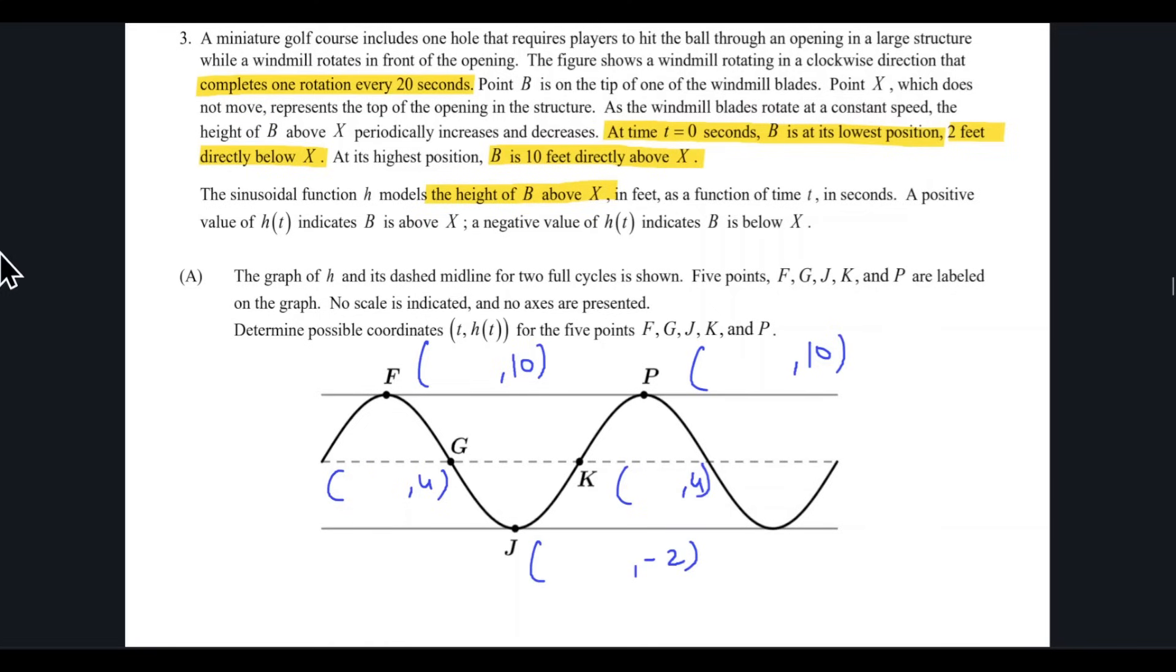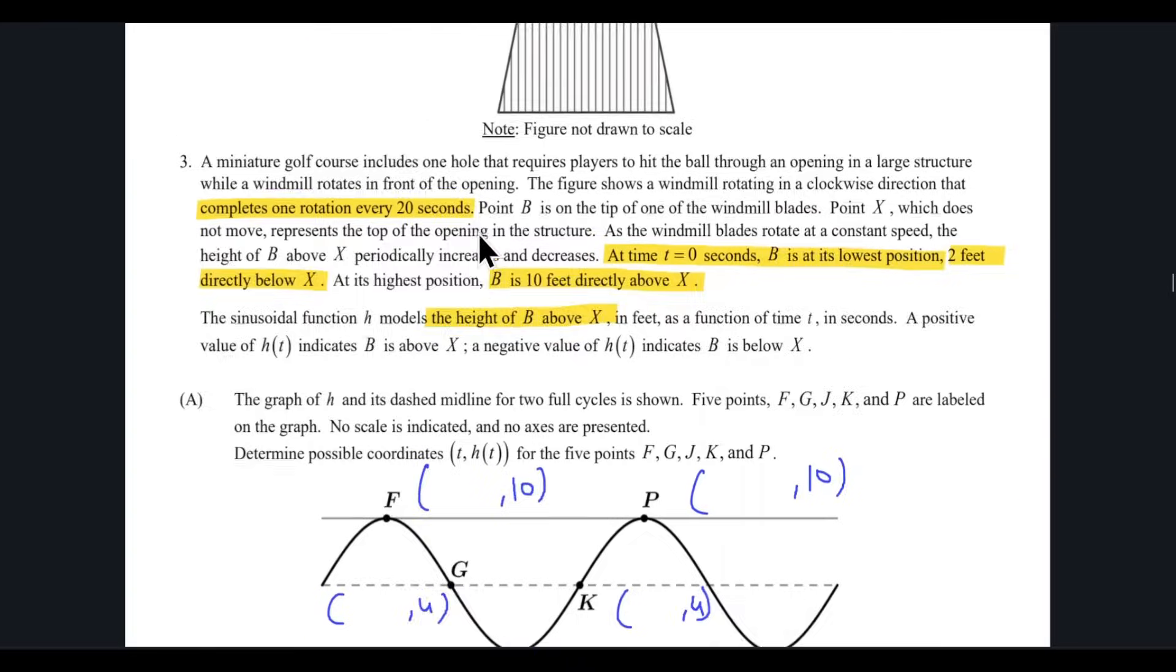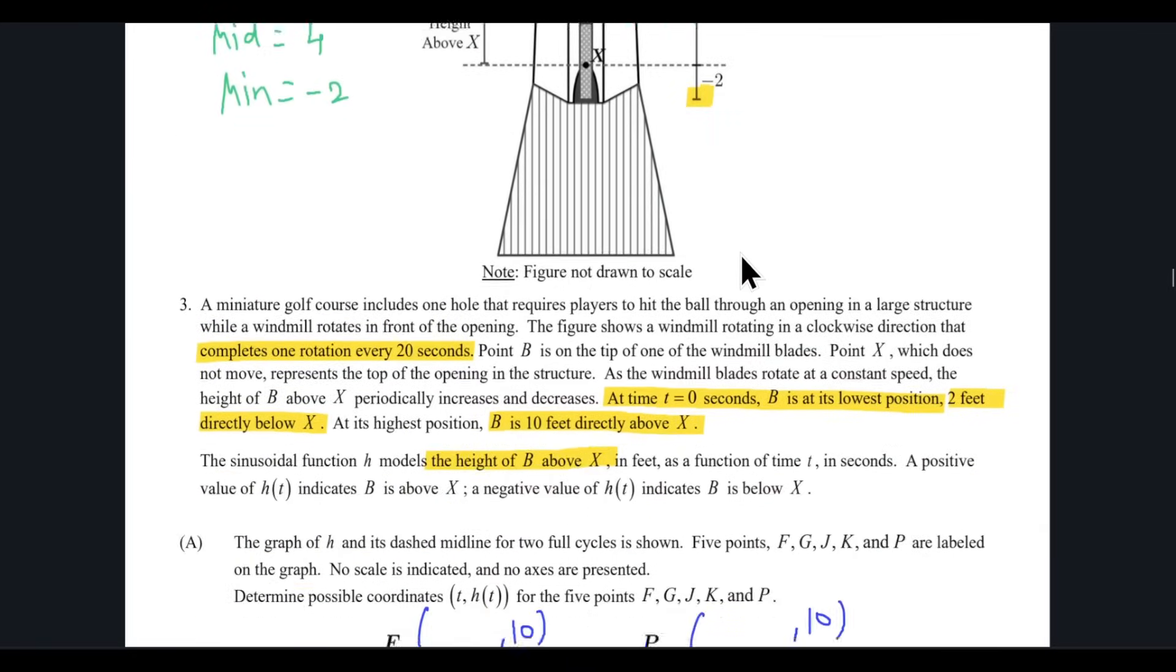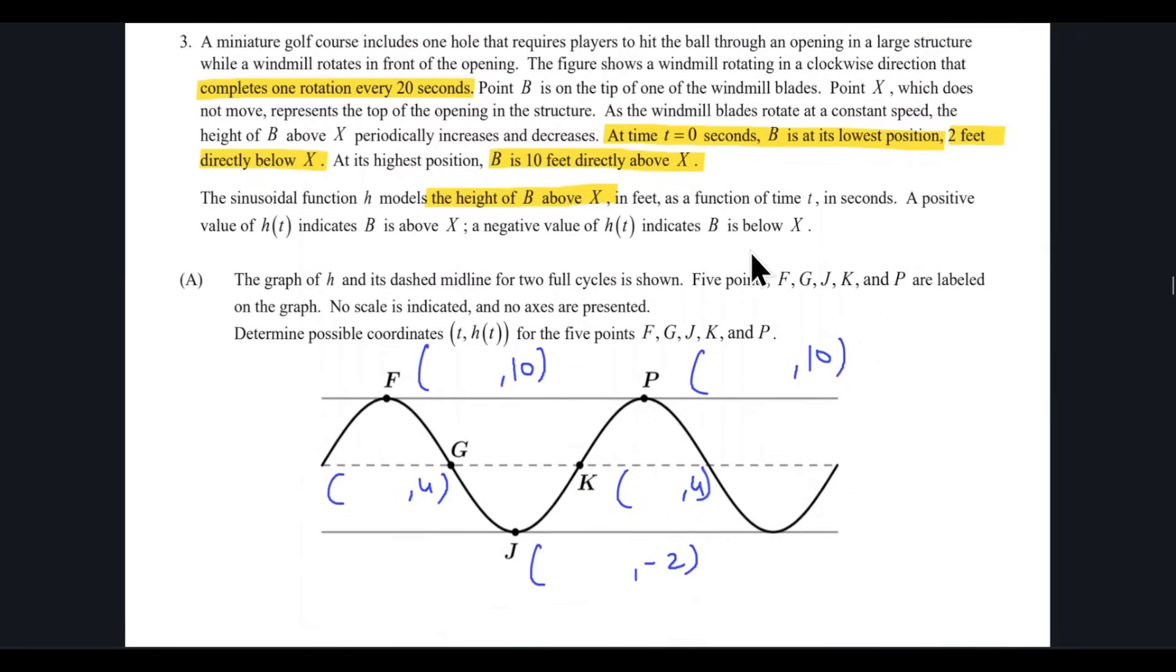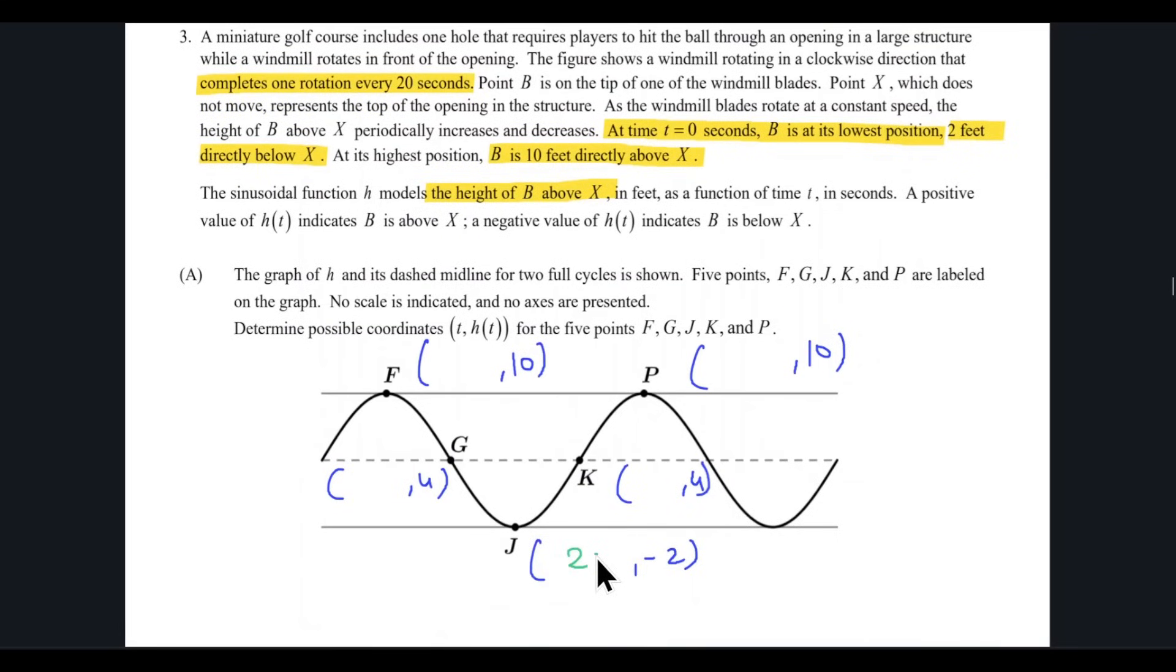AP Precalculus, the College Board allows this. They have mentioned this in the instructions, but I'm personally uncomfortable putting negative times. I'm just going to put rather than the time as 0, I will put same as the period because after one period, it will again be at the same position. So I'll put this as 20.